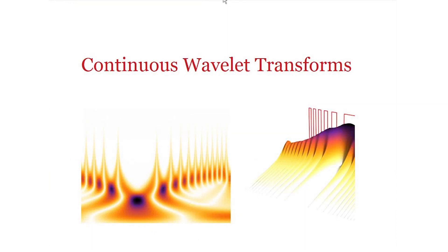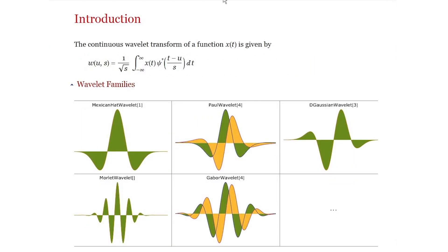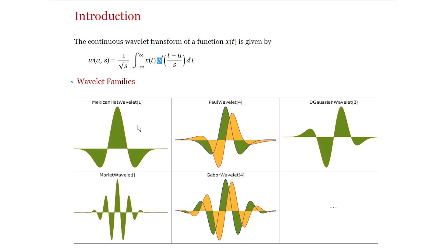This brings us to the idea of continuous wavelet transforms. In a continuous wavelet transform, the signal is decomposed using translation and scaling of a single wavelet — the single wavelet function psi, sometimes referred to as the mother wavelet. The resulting transformation is in the form of a convolution, and the result is in the form of different scales and translations. Here are some popular wavelets used in research and time series analysis: the Mexican hat wavelet, Paul wavelet, derivative of a Gaussian (also called DeGaussian), Morlet wavelets, Gabor wavelets, and so on.